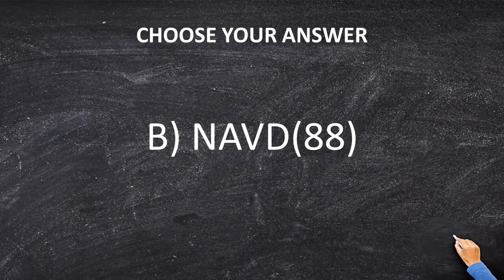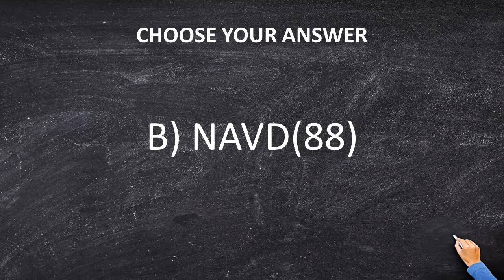The final answer is B — NAVD 88. If you memorize that, you will not only have a better chance of passing the FS exam, but you will also have a better chance of staying out of trouble as a professional surveyor. I've testified in several cases over the years where the surveyor used the wrong datum, caused harm to his clients, and was sued because of that mistake. So keep your noses clean and use the right datum.